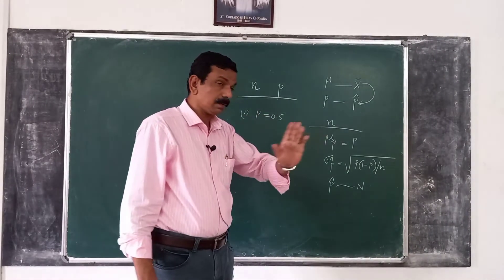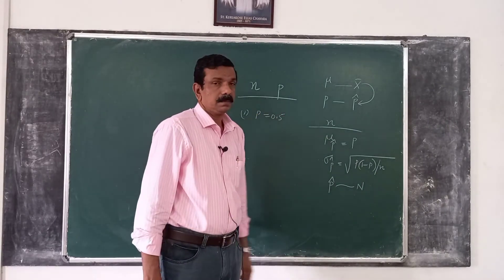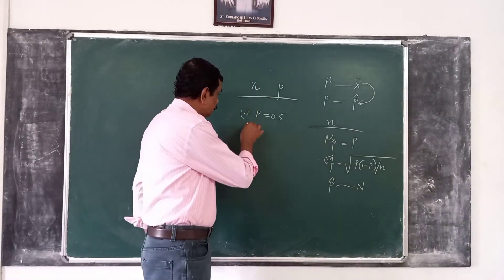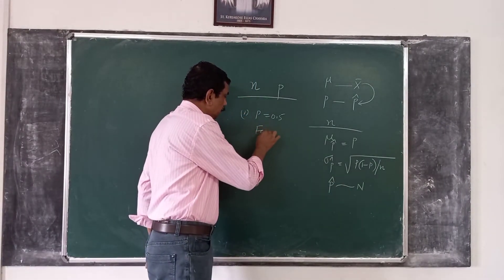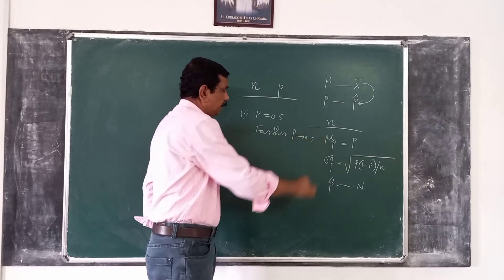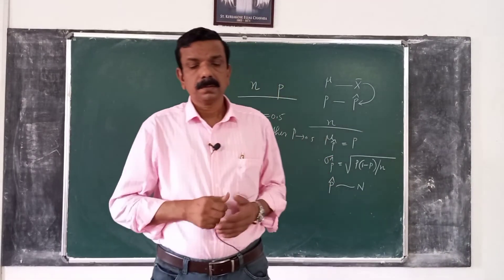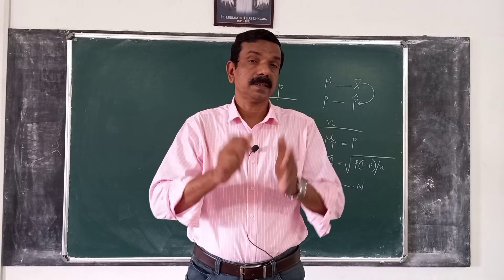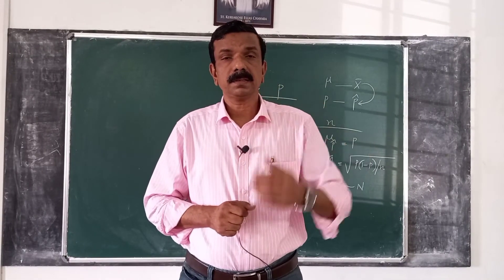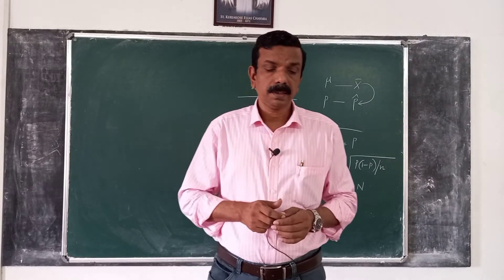So even if n is not very large, if p is close to 0.5, then the distribution of p-hat is approximately normal. And the further away p is from 0.5, the larger the sample size n must be for the approximation to be accurate.